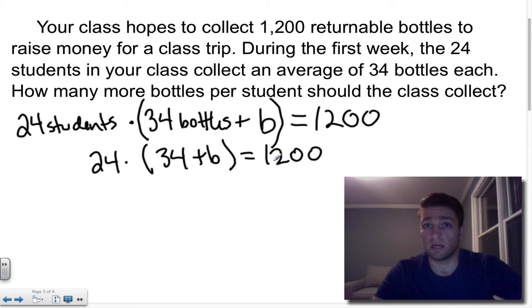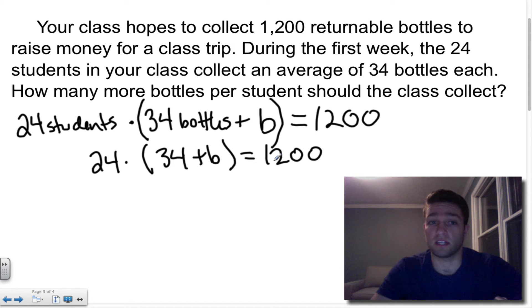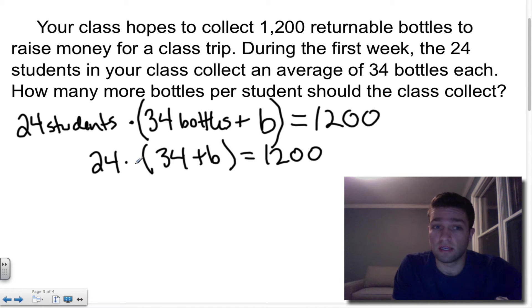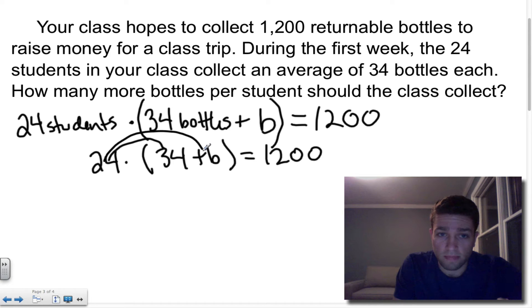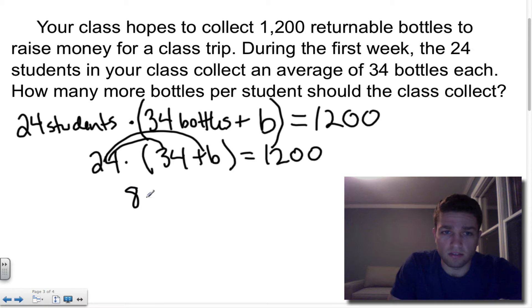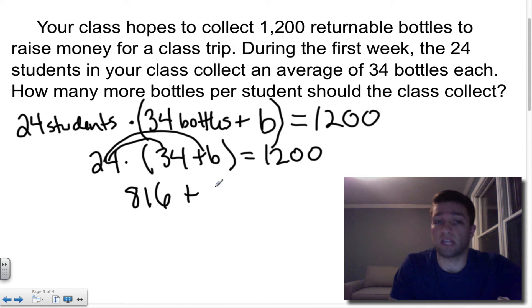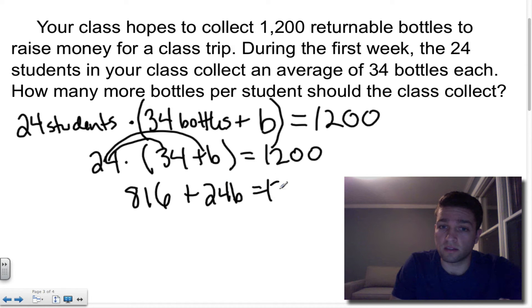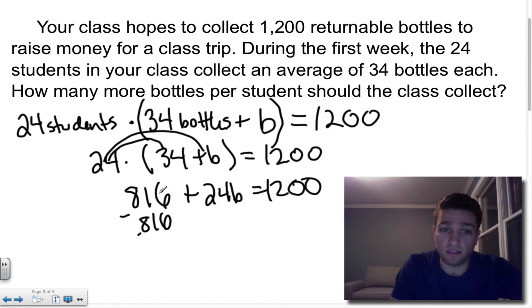If you're struggling with setting up the word problem, don't worry — we're going to do many more of these examples. To solve, remember we simplify first and then solve. I've got to distribute, so 24 goes to everything in the parentheses: 24 times 34 is 816, plus 24 times B is 24B, equals 1,200.